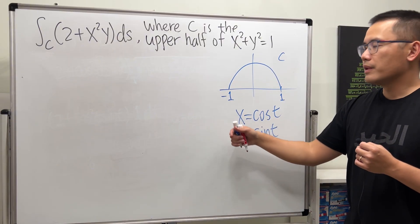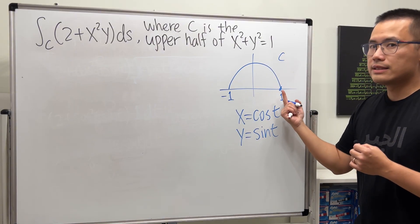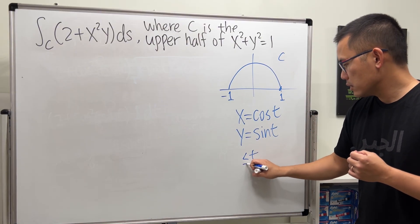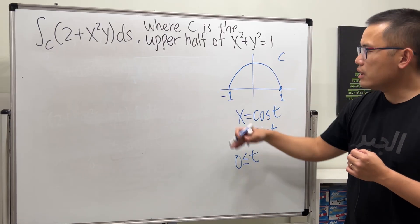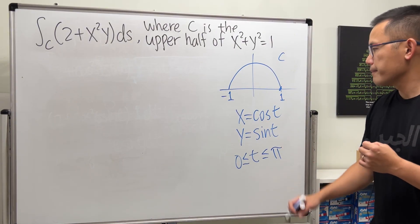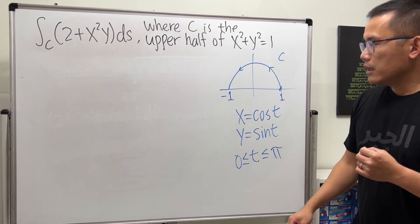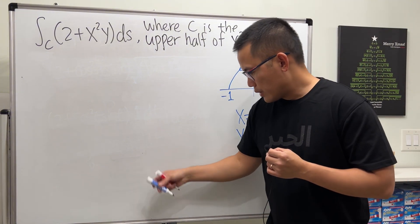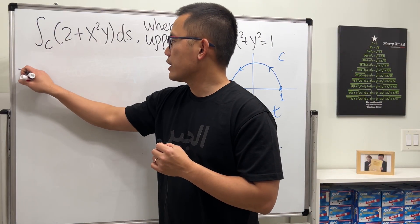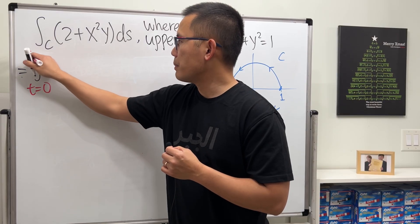We are going from here to here. We can take this starting angle — that's when t equals 0. Then we rotate up to the other end, which is when t equals pi. So we are going in this direction, and now we are going to take this integral to the t world.